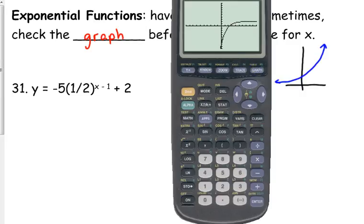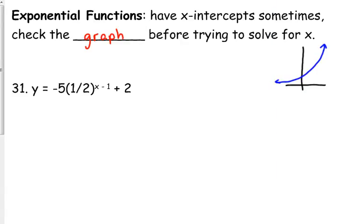Alright, so we've got a couple of things that happen with this one. A couple of translations. First of all, that negative 5 flips it over and then the plus 2 shifts it up. So it flips over the x-axis but then moves up so then it crosses the x-axis. So we do have an x-intercept here. So we can proceed with setting this equal to 0 and solving for that x-intercept.